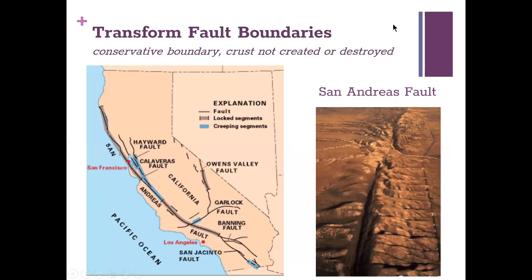Transform boundaries should all be familiar to us because we live in California. Our most famous fault, the San Andreas Fault, exists because of a transform fault boundary. The Pacific Plate is moving while the North American Plate remains relatively still, and this creates the San Andreas Fault.